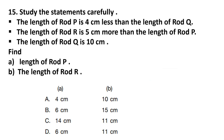Question number 15. Study the statements carefully. The length of rod P is 4 cm less than the length of rod Q. The length of rod R is 5 cm more than the length of rod P. The length of rod Q is 10 cm. Find A: the length of rod P, and B: the length of rod R.